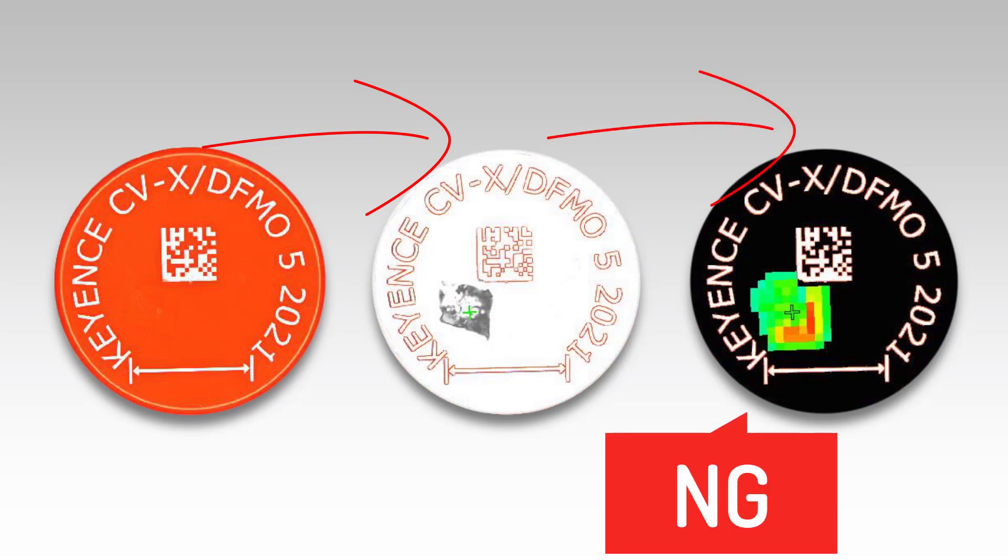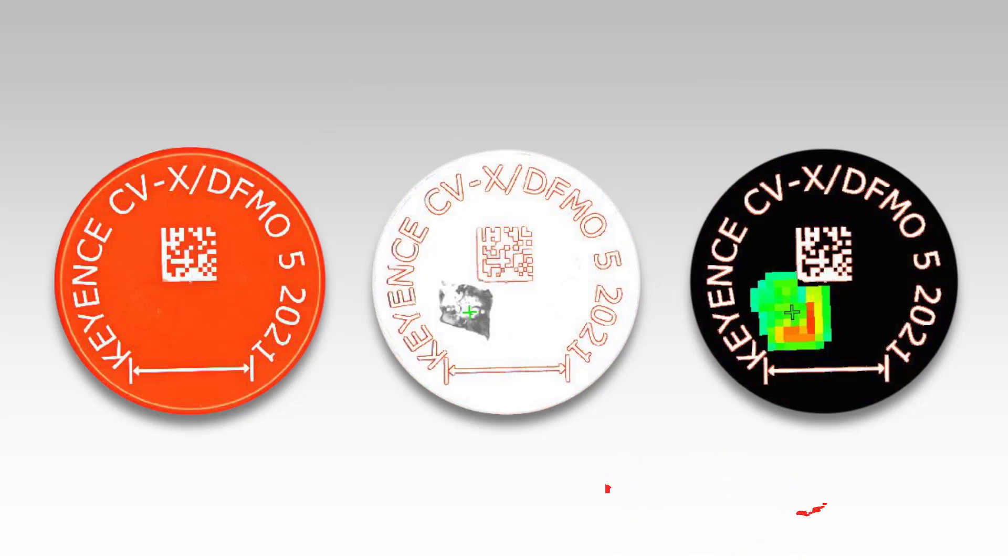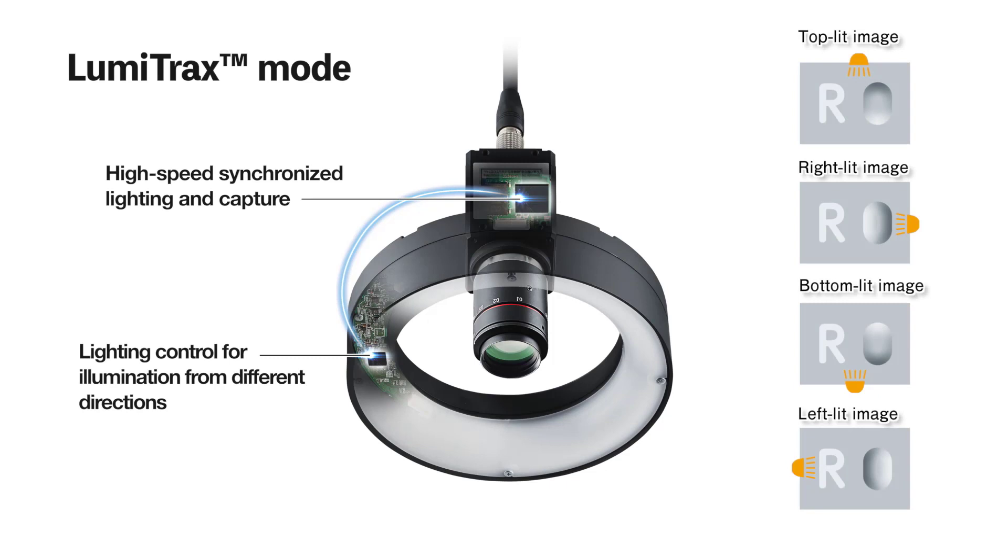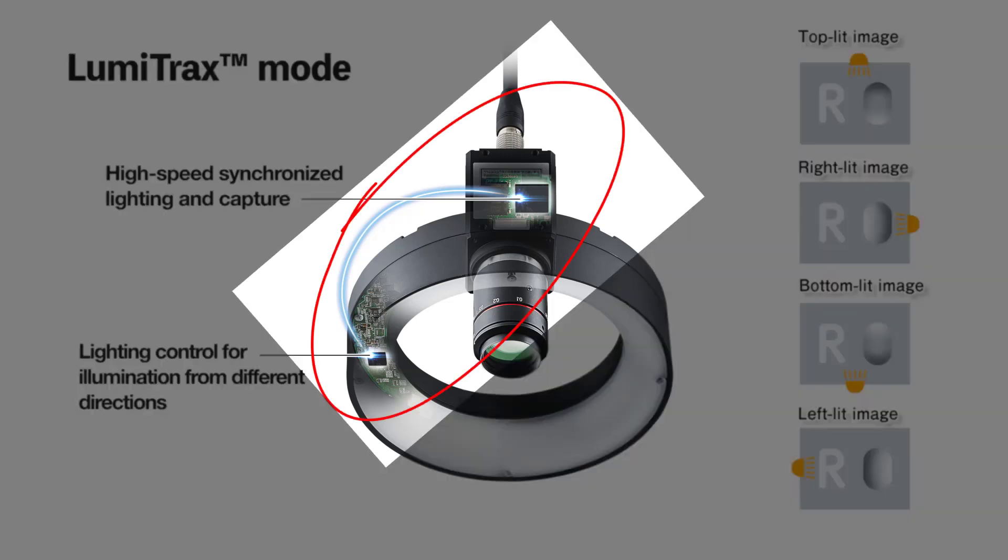With the debris inspection tackled, now we can turn our attention to the dent. The multi-spectrum light is also equipped with Lumetrax mode to detect surface changes and to reduce glare. Like with multi-spectrum mode, the light and camera are synchronized to enable high speed captures.